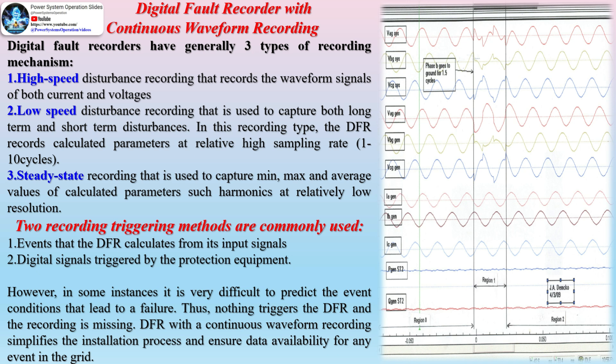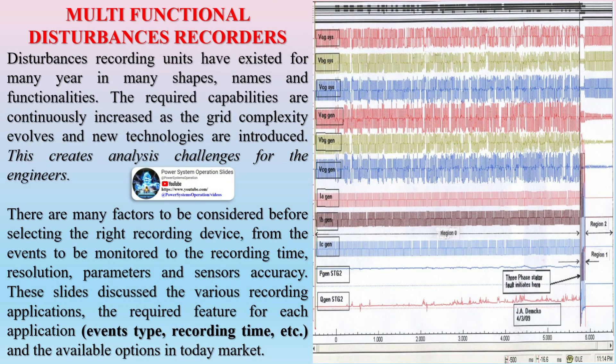With these benefits and advantages, the DFR is now used in different applications across a diverse set of industries. With the information and data provided by the recorder, an engineering or management team can easily analyze the power system process and its failures, and its use can also improve the efficiency and reliability of most engineering processes. Multi-functional disturbance recorders have existed for many years in many shapes, names, and functionalities. The required capabilities are continuously increased as the grid complexity evolves and new technologies are introduced, creating analysis challenges for engineers.